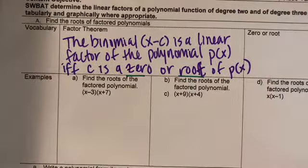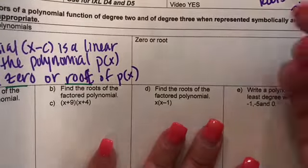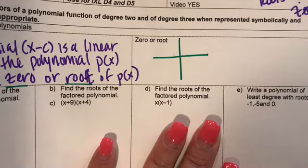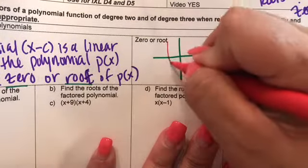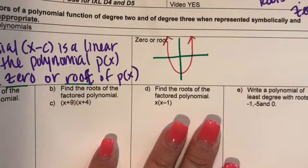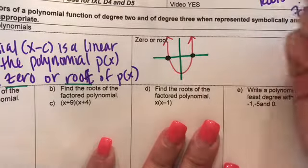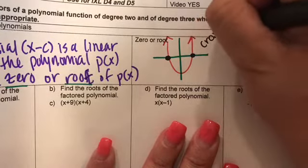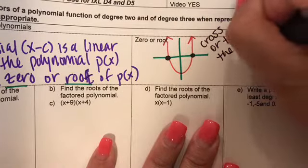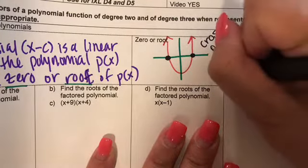So what I mean by zero and root — let's look at the next definition. Whenever you have a zero or root, this is how you graph it. Let's say we had an X and Y plane and you graph a parabola. Where we cross the X-axis is going to be your root.